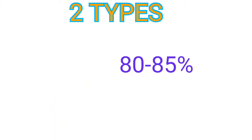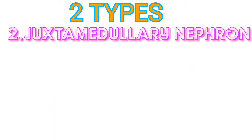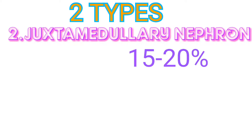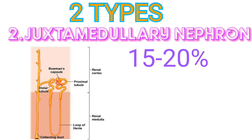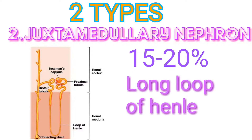The next type is juxtamedullary nephrons, which make up 15 to 20 percent of nephrons. Their renal corpuscles lie deep in the cortex close to the medulla, and they have long loops of Henle that extend deep into the medulla. The ascending limb can be both thick and thin — part of it is thin and part is thick.